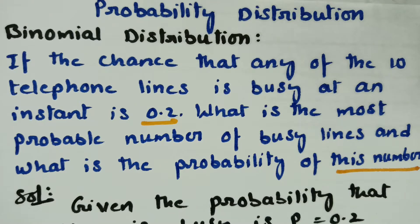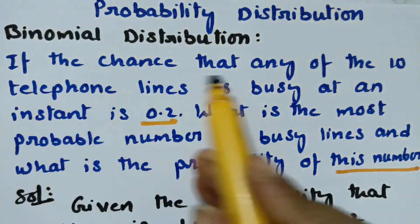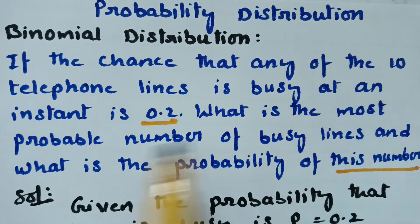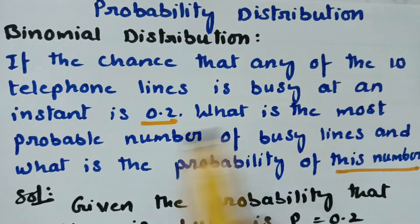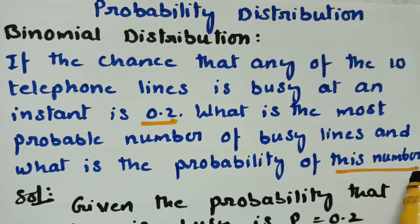Today's video is on binomial distribution. There is a problem ready on the screen: if the chance that any of the 10 telephone lines is busy at an instant is 0.2, what is the most probable number of busy lines and what is the probability of this number?